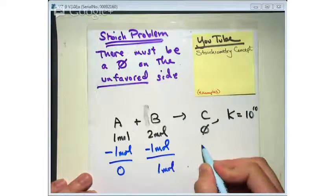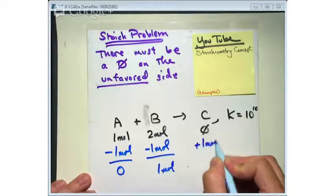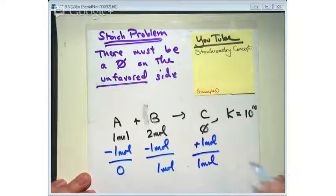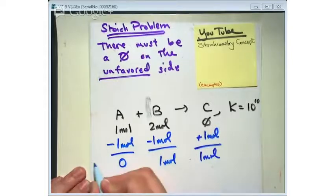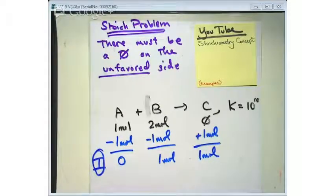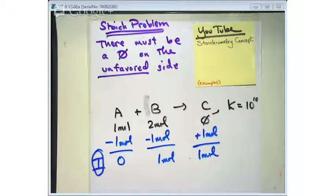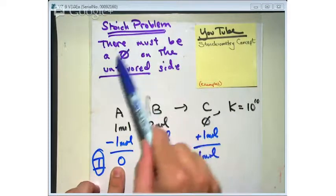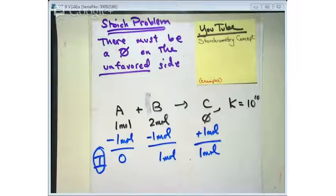This is now your I-line of the ICE table. This previous part was called a stoichiometry problem — using this concept that if K is large, you have to move the reaction forward. You need a zero on the unfavored side. See how there's a zero now on the unfavored side? There must be a zero on the unfavored side. Now you can start the ICE table. If there's not a zero on the unfavored side, you must do a stoichiometry problem first.